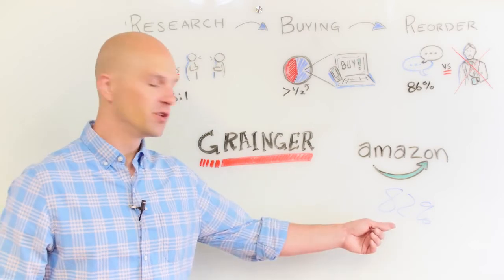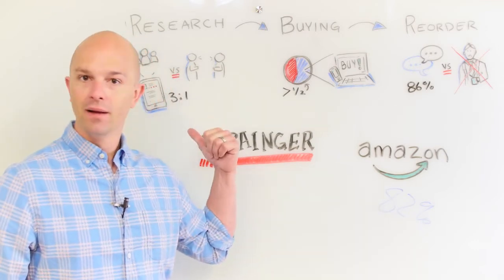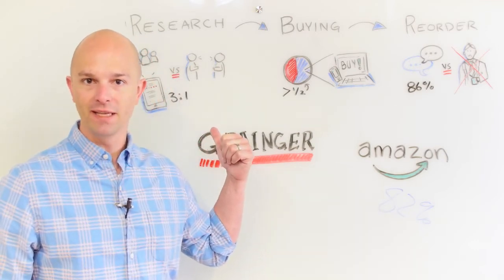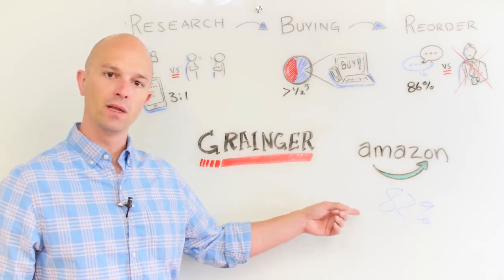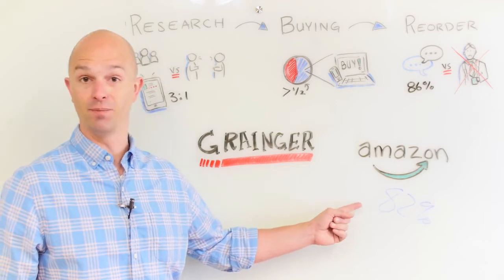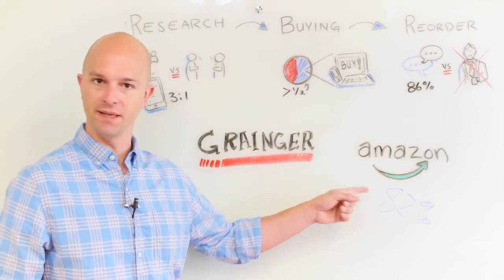So they're going to Amazon, they're doing other research, and then they're buying somewhere else. They buy wherever the company tells them to buy. Now what this does over time is erode the buyer's market share. Amazon business is blowing up. People are used to this experience.